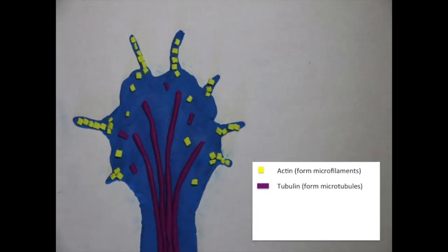The filopodia act as a sensory network, receiving cues from the environment. The center of the growth cone contains microtubules, shown in purple, which are polymers of tubulin responsible for extending the axon shaft.